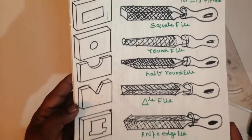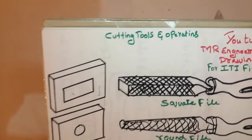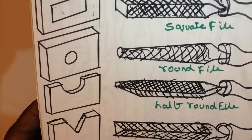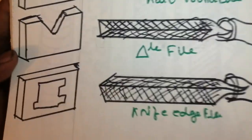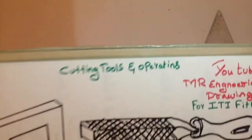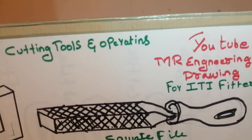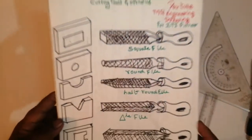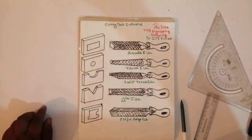If you like this video, please subscribe — this is a square file, this is a round file, this is a half-round file, this is a triangle file, this is a knife edge file. It will come very neatly. This is my channel — subscribe it, share with your friends and everyone. Thank you friends for watching patiently.